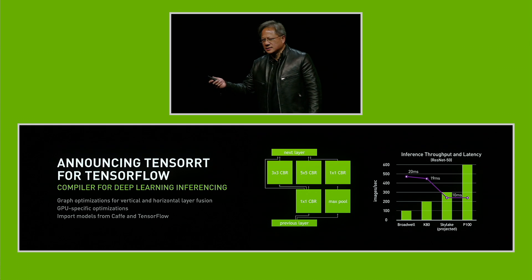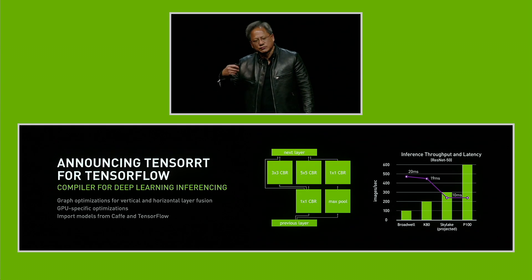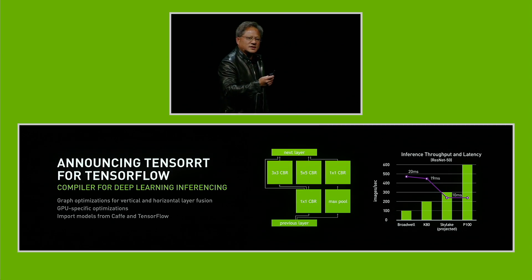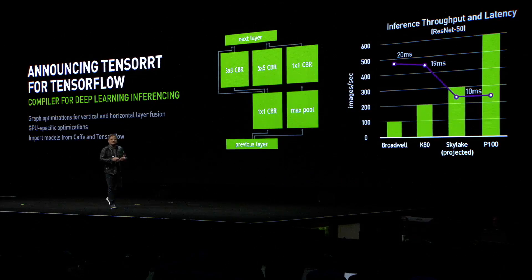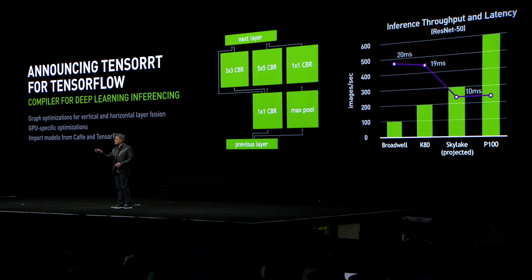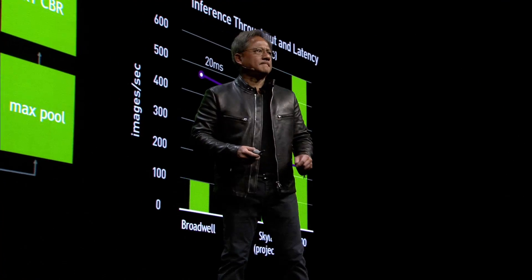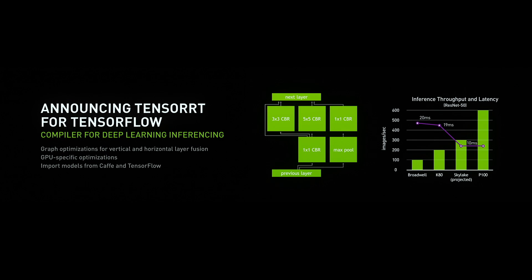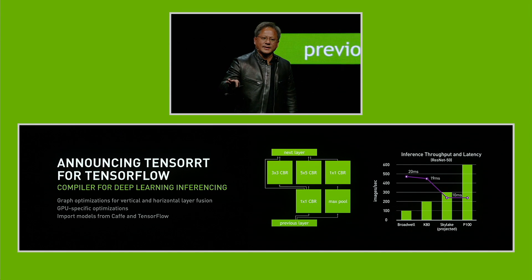Latency is equally important, and the reason for that is because if you were talking to Cortana and you asked a question, you would like it to respond very quickly in just a few milliseconds. The number of people who could speak to Cortana at the same time in the cloud is important because that has to do with the capacity and cost of the data center. The purple line is latency, the green line is throughput. P100 does 600 images per second, and Skylake is about 300, and both of them can do it in about 10 milliseconds.